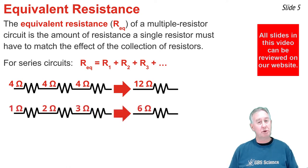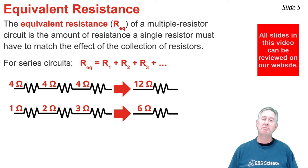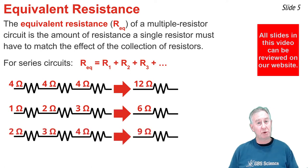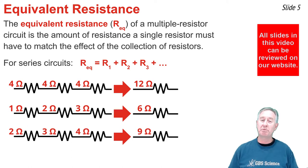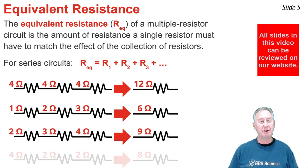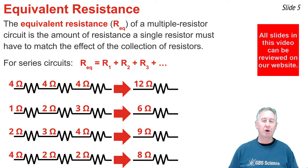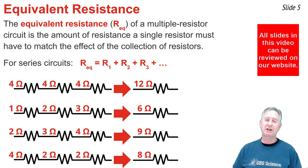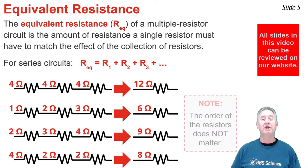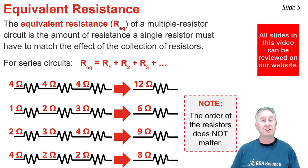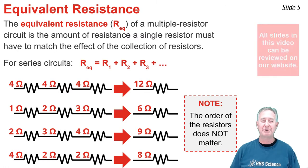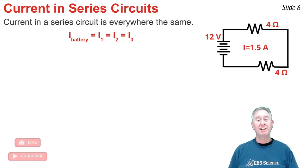If you had 1 ohm, 2 ohms, and 3 ohms together in series, the equivalent resistance would be 6 ohms. If you had 2 ohms, 3 ohms, and 4 ohms in series, the equivalent resistance would be 9 ohms. And if you had 4 ohms, 2 ohms, and 2 ohms in series, that would have an equivalent resistance of 8 ohms. Note that the order in which you place these resistors in the circuit does not have any effect upon the equivalent resistance.